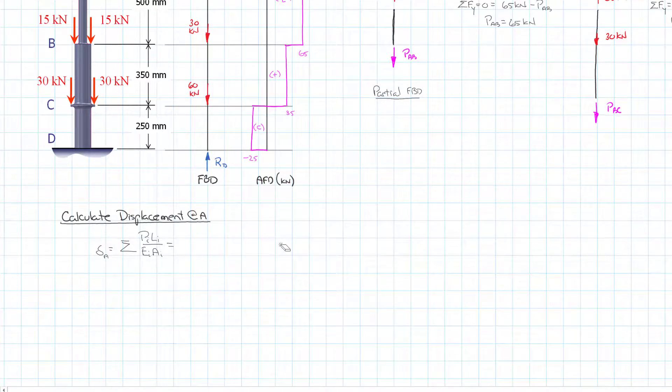We're going to start at the top and work our way down. Starting at AB we have our internal force and I'm going to do a little bit of conversion here so we have compatible units. Rather than kilonewtons I'm going to put it in newtons, so that's 65,000 newtons times the length, and that's the length over which that 65,000 newtons is applied, so that's the distance between A and B or 500 millimeters. Then E, we're going to put E in megapascals because a megapascal is a newton per millimeter squared so it all works out, so 200,000 megapascals times our area.